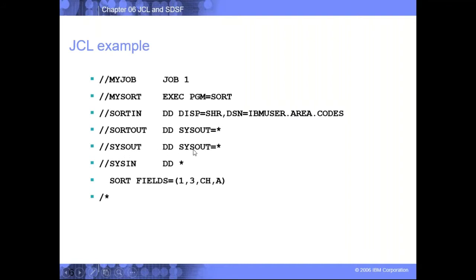SYSPRINT DD star tells the mainframe system to show whatever messages or execution results from this utility on the screen. For example, if my job failed, I want to see the reasons why. If my job ran fine, I want to see that as well. This DD statement tells the operating system to display the result — whether it's fine or an error. If I remove this statement, I cannot see the messages to help debug.